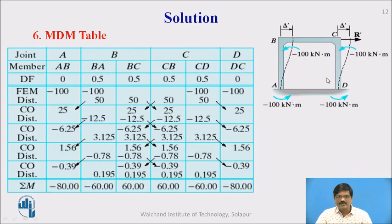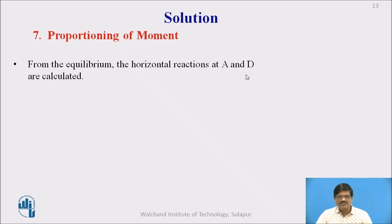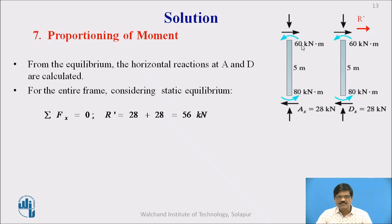Again, the arbitrary moments are written — all are anticlockwise in nature, so they are considered as negative. The distribution factors are already determined. We get the final moments based on these. From equilibrium, the horizontal reactions at A and D are calculated. A we got as 28 and D we got as 28. As a whole, applying the equilibrium equation, R must equal D plus A, giving a value of 56 kN.